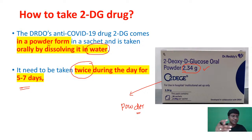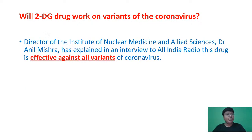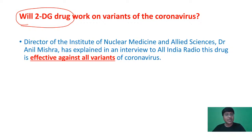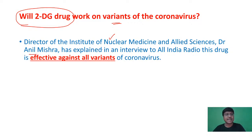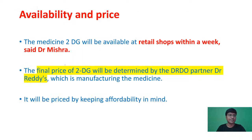Another important question: does 2DG work on the variants of coronavirus? Yes. The Director of the Institute of Nuclear Medicine and Allied Sciences, Dr. Anil Mishra, has explained that it is also effective in all variants of the coronavirus. That is a very important piece of information regarding the 2DG drug.